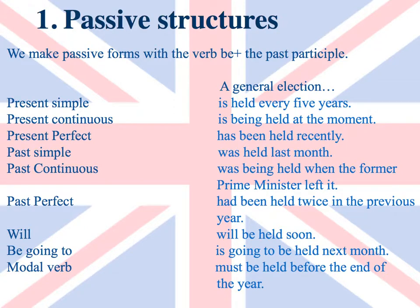Let's start with the passive structures. We make passive forms with the verb be plus the past participle. Pay attention to the examples. Present simple: a general election is held every five years. Present continuous: a general election is being held at the moment. Present perfect: a general election has been held recently. Past simple: a general election was held last month.